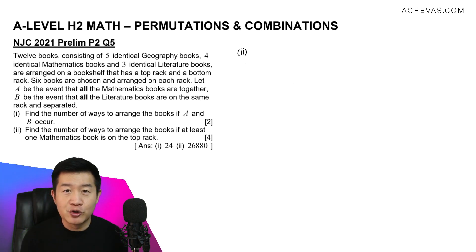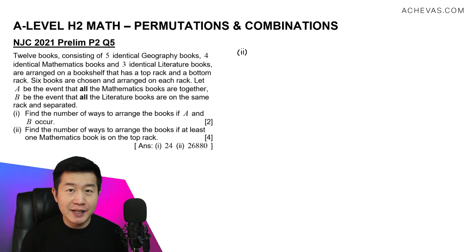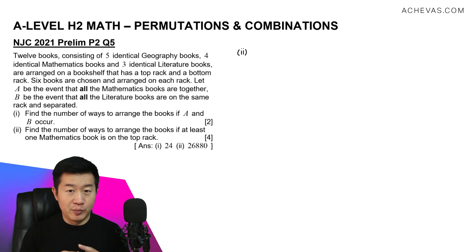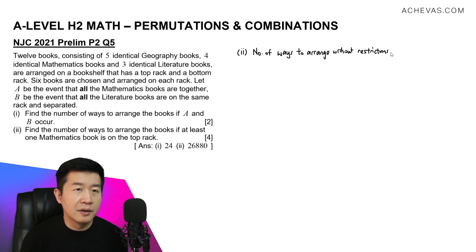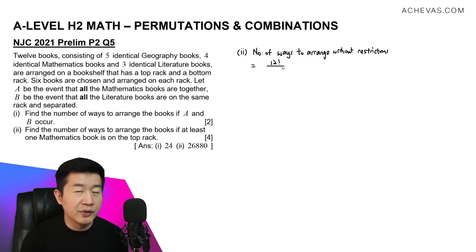In part two, we calculate using the complement method. First, I'll find the number of ways to arrange all 12 books without any restrictions. There are 12 books, so 12 factorial. Five of them are identical geography books, so divide by 5 factorial. Four of them are identical mathematics books, divide by 4 factorial.